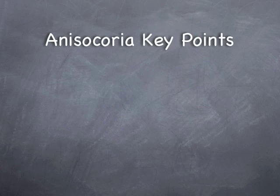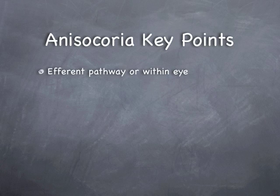Some key points once more. Anisocoria may arise due to a lesion impairing the efferent sympathetic or parasympathetic pathway to the eye, or due to factors within the eye itself. The pupil should be examined in both light and dark with distance fixation.